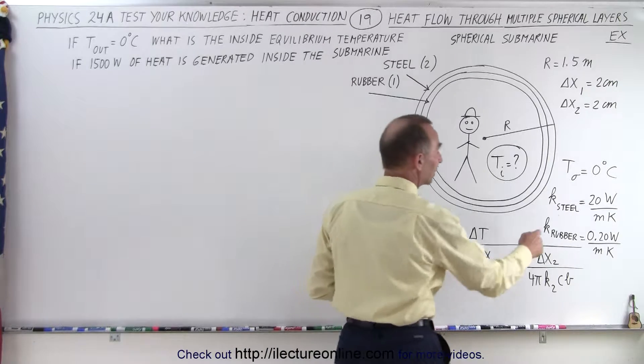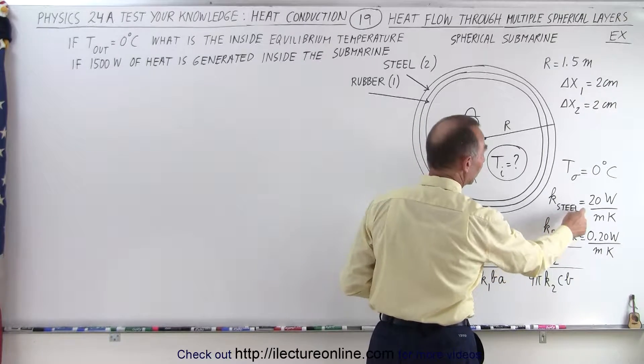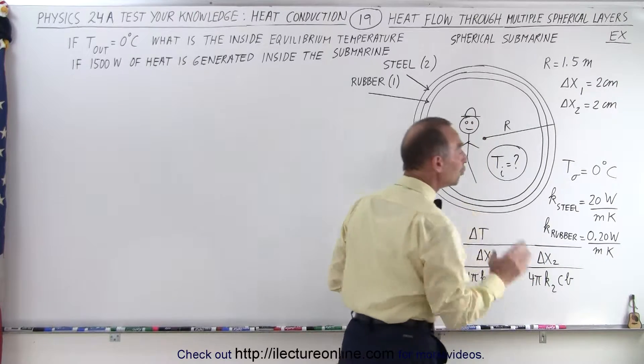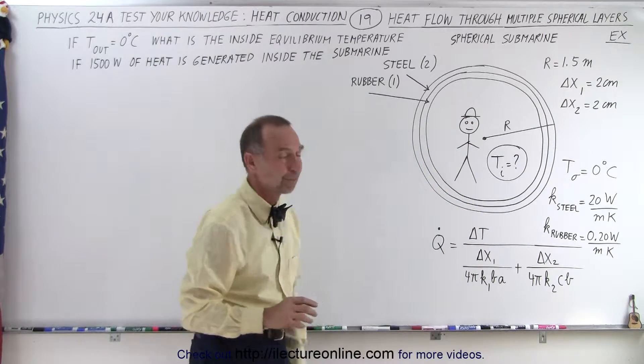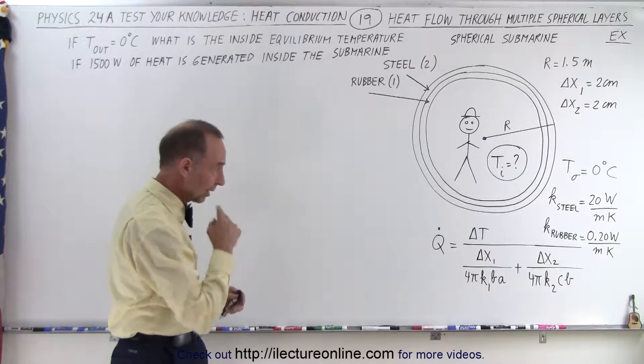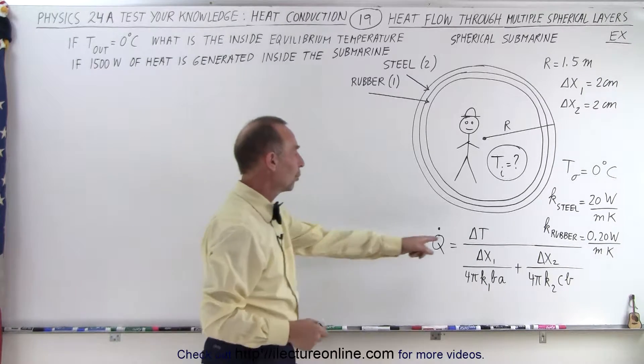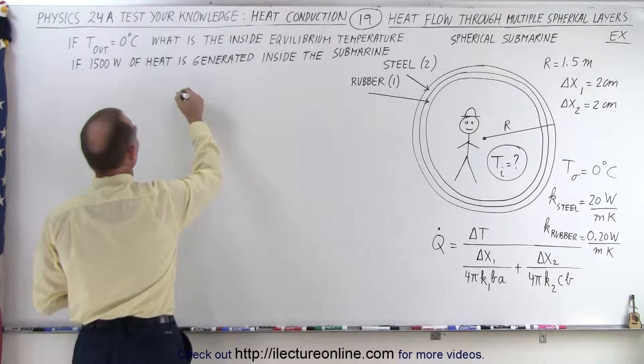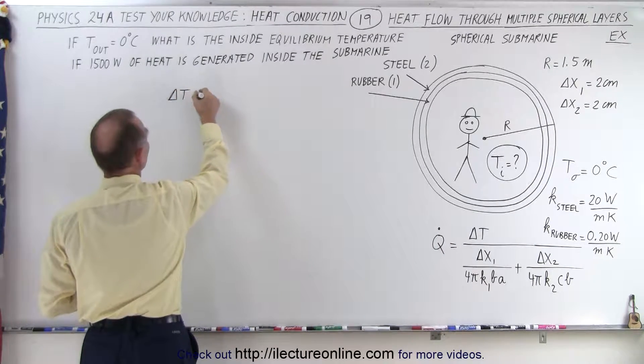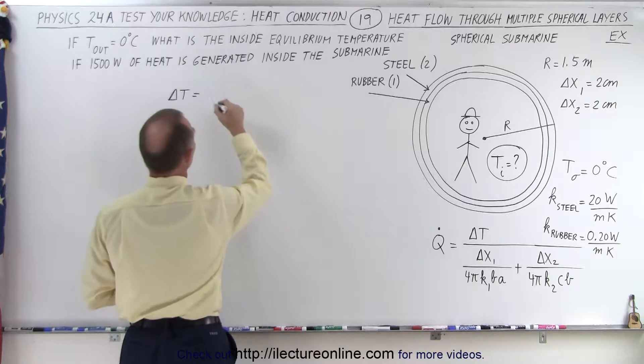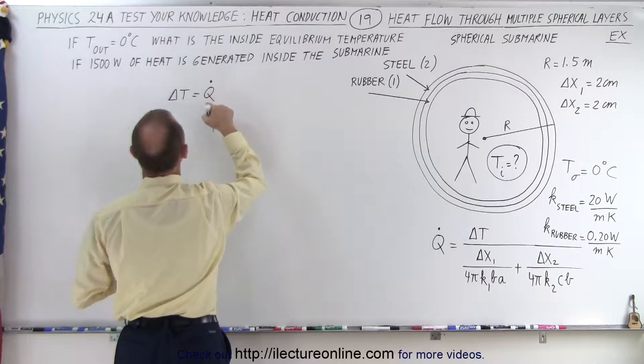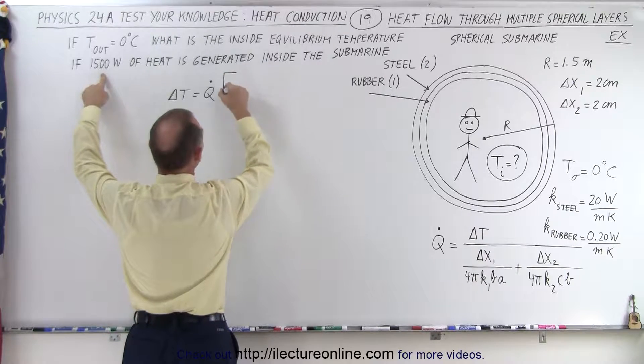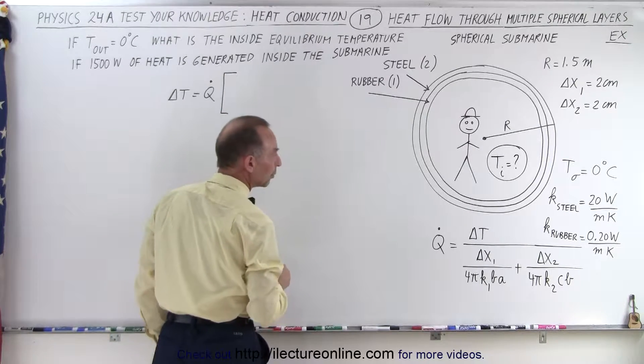Notice that the conductivity, the heat conductivity of steel is 20 watts per meter per Kelvin. And the conductivity for rubber is 0.2 watts per meter per Kelvin. So how do we do that? Well we simply plug it all into the equation. And of course we're looking for the difference in the temperature. Which means that the difference in the temperature, delta T, is equal to the heat flow, which is going to be the 1500 watts, times the sum of the two heat resistances.